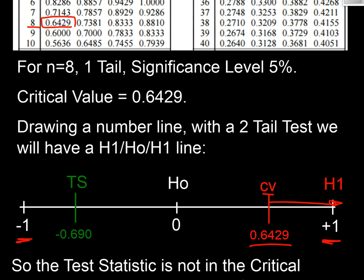And we earlier found out that our test statistic was minus 0.690. So our test statistic is not in the critical region—miles away from it—and therefore we are concluding that there is no correlation between the two judges' decision-making, which is rather worrying, isn't it?